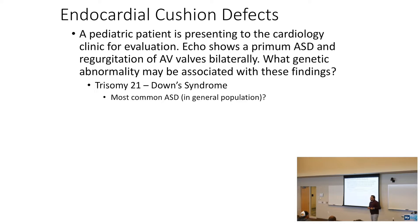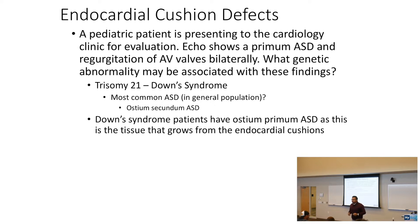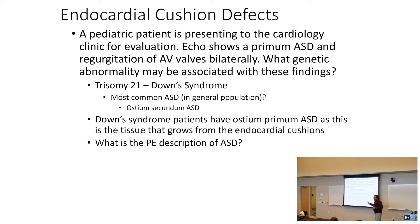The most common ASD in the general population is ostium secundum ASD. However, Down syndrome patients have an ostium primum ASD. The primum ASD is important because this tissue grows from the endocardial cushion — so if there's an endocardial cushion defect, they can't form their AV valves properly. The physical exam finding of ASD is a fixed splitting S2.